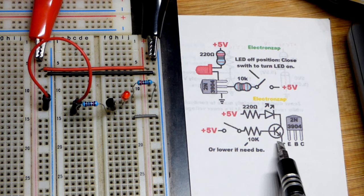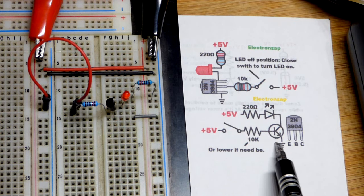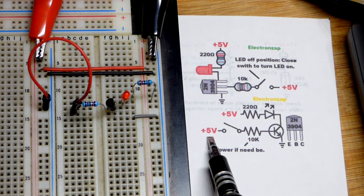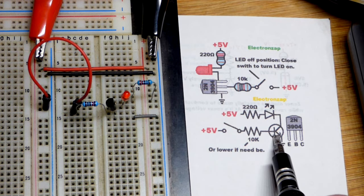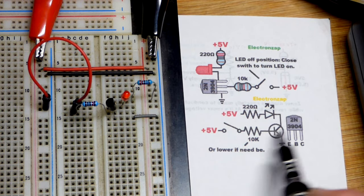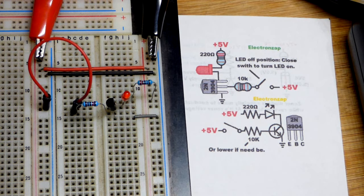It does need a little bit of current. But if that current barely matters, then in essence the 555 is not really switching the load. It's just switching the transistor which needs very little current. But the transistor can switch a lot higher current.